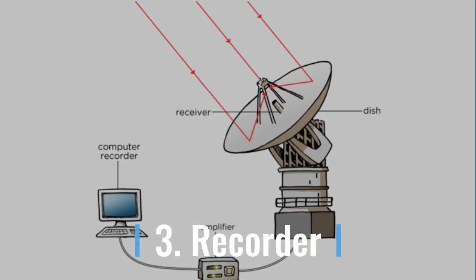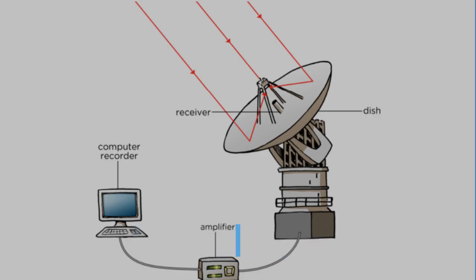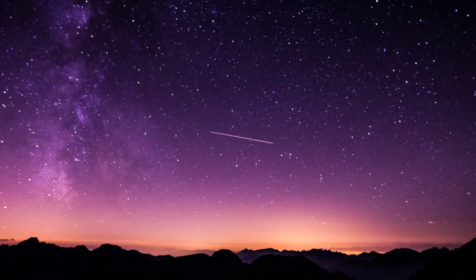The third component of a radio telescope is a recorder, used to keep a record of the signal. Most radio telescopes nowadays record directly to some form of computer memory or disk, as astronomers use sophisticated software to process and analyze this data.